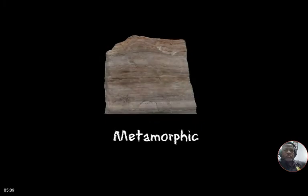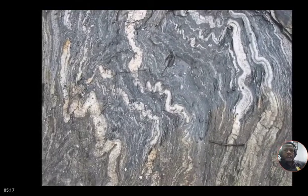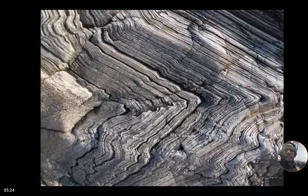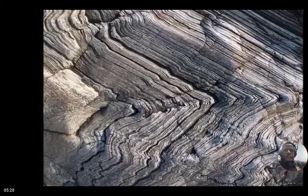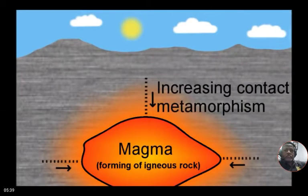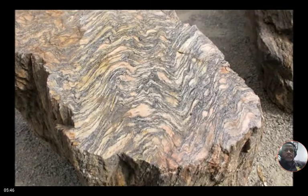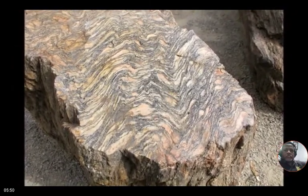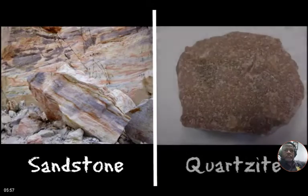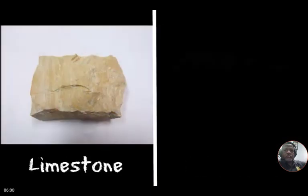The third type of rock is metamorphic rock. The word metamorph means to change form, and metamorphic rock is rock that has been changed by extreme heat and pressure. Sedimentary rock, igneous rock, or even other metamorphic rocks can be changed into new kinds of rock. Metamorphic rocks can form deep under the earth where pressure and temperatures are high, or when rock near the surface is heated by tectonic plates or magma. For example, shale becomes slate, sandstone becomes quartzite, and limestone becomes marble.